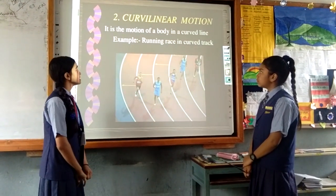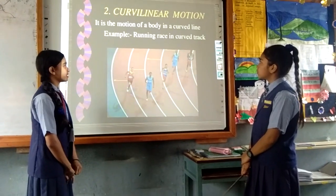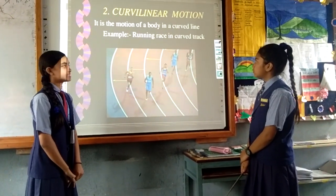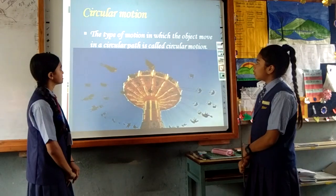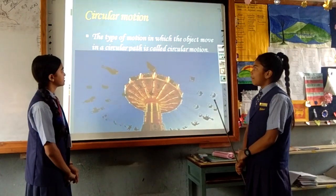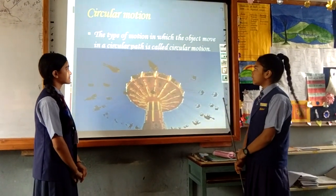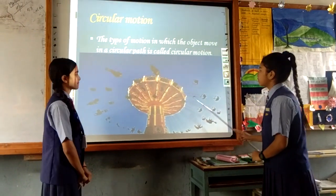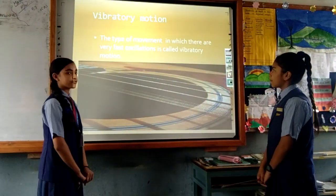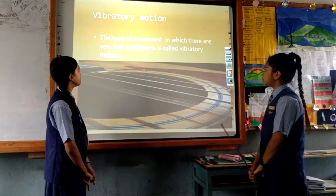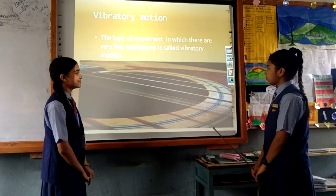It is the motion of a body in a curved line, for example running a race on a curved track. Circular motion: the type of motion in which the object moves in a circular path is called circular motion. The type of movement in which there are very fast oscillations is called vibratory motion.